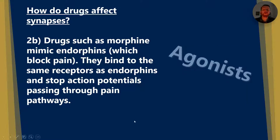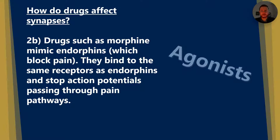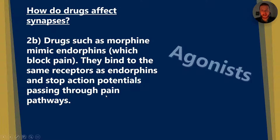Drugs such as morphine are also agonists. What they do is mimic endorphins, which are neurotransmitters that block pain. Morphine blocks the same receptors as endorphins, and this is going to stop action potentials passing through nervous pathways associated with pain.